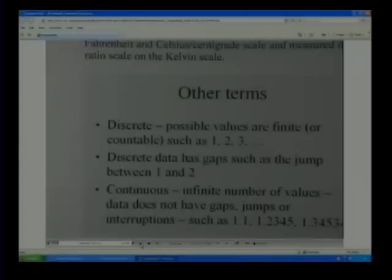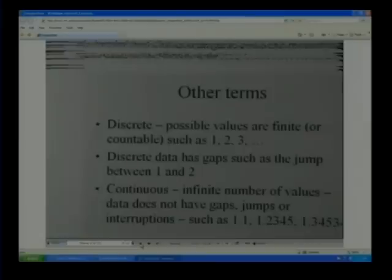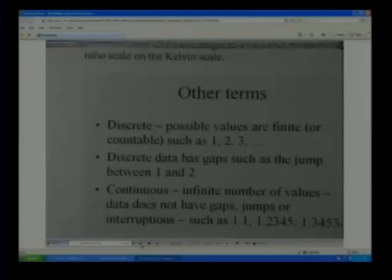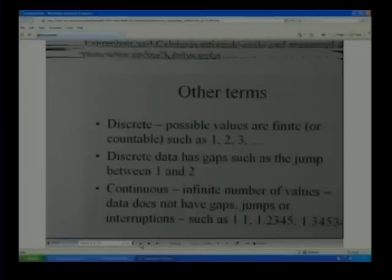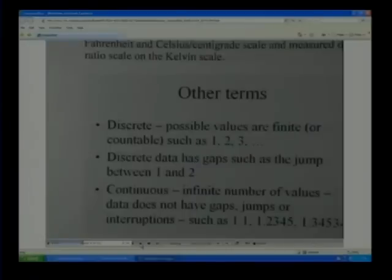Discrete. Discrete means that it's this value, this value, this value. I mean, there's specific values. Counting numbers. One, two, three, four, five, six. They have gaps between them. One and two has the same gap between two and three. There's a gap there.